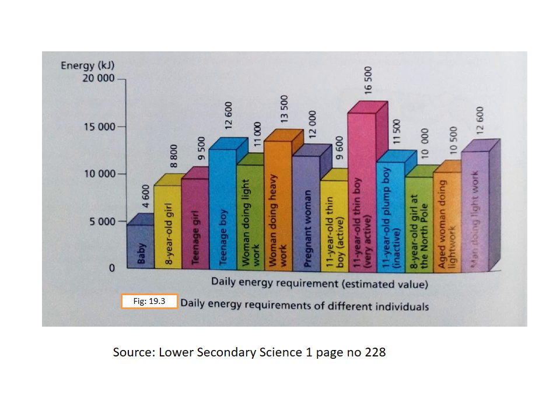This graph shows different daily energy requirements of different individuals, with energy in kilojoules on the vertical axis and different individuals on the horizontal axis. A baby needs only 4,600 kilojoules of energy daily because it does not have to do much work, just needs energy to grow. Whereas a very active 11-year-old boy needs 16,500 kilojoules of energy because he requires a lot of energy for different tasks like studying and sports, as well as for growth. You can see this graph on page 228.